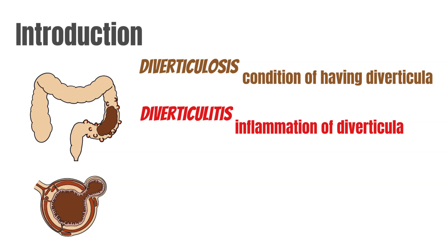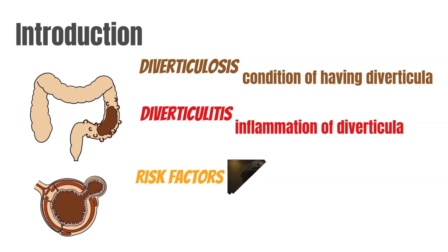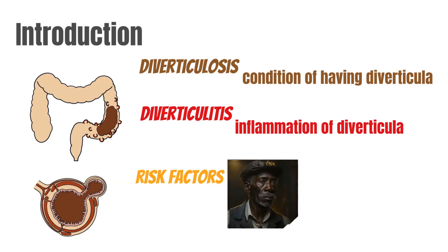What this means is that your colon — your large intestine — over time, for various reasons, the health and structure of the large intestine can weaken, can get unhealthy, and they can form these little outpouchings. Sometimes these outpouchings can become inflamed. That's the term diverticular disease: diverticulosis and diverticulitis.